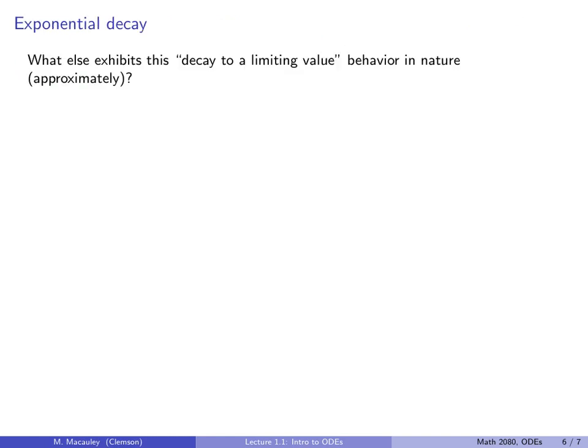What else in nature exhibits this decay to a limiting value approximately? The earth's population is growing but it is not going to grow forever — it is going to eventually taper off towards some limiting value. Another example: the velocity of a falling object with air resistance. From high school physics, a falling object's velocity increases quadratically and would theoretically grow without bound, but realistically objects like a parachuter reach a limiting terminal velocity because of air resistance. We will study both of these in more detail in the coming weeks.